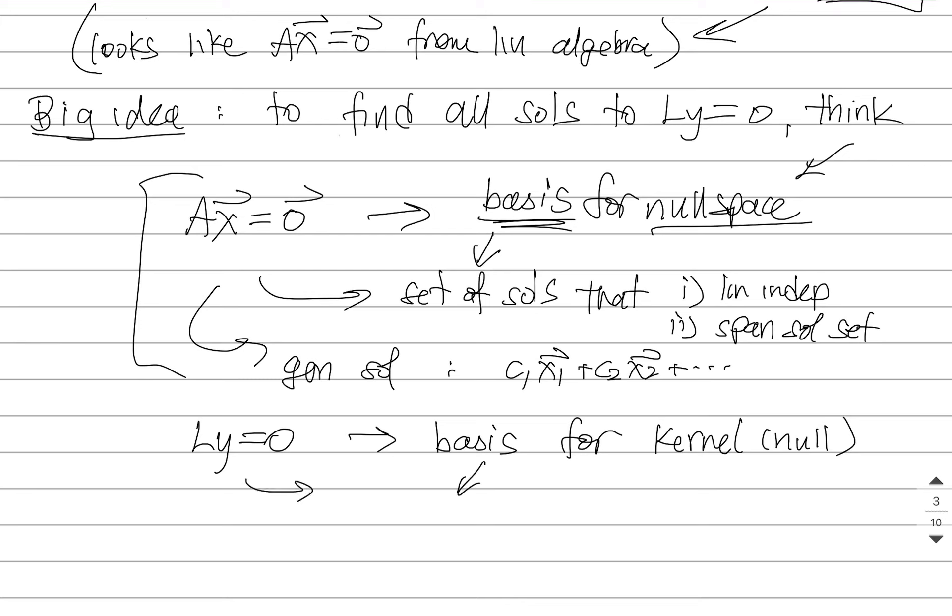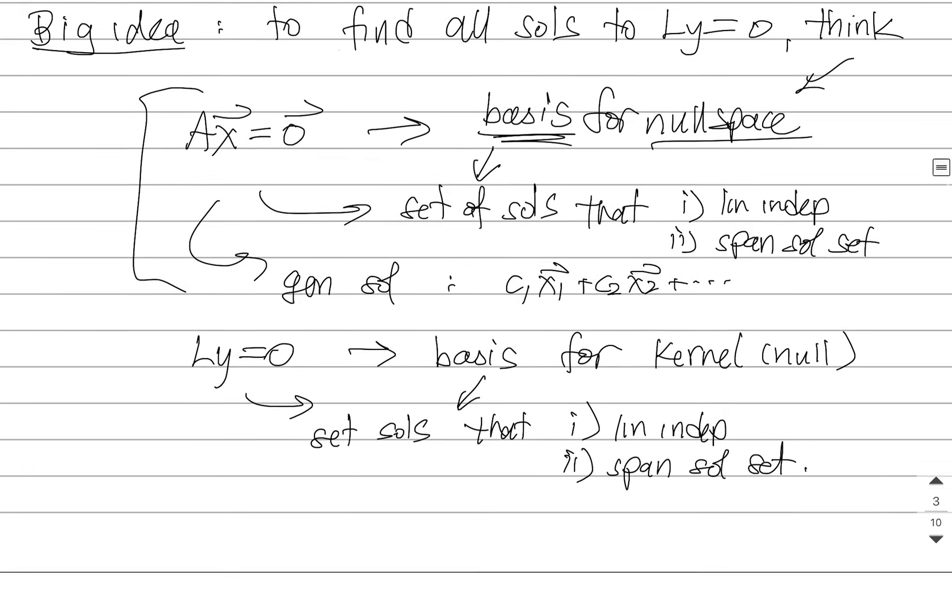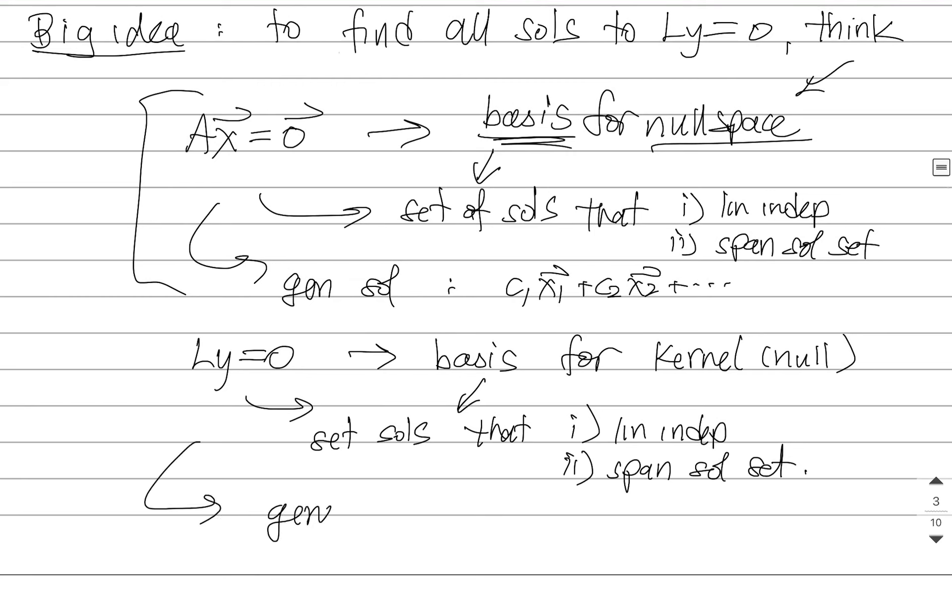And that means what we need to do is find a set of solutions that are, number one, linearly independent, and number two, span the solution set. And the point is we were trying to find a general solution that's going to look like a linear combination of some of these other functions. That's what we're trying to get at. And from these basis solutions, we will be able to form every other solution.